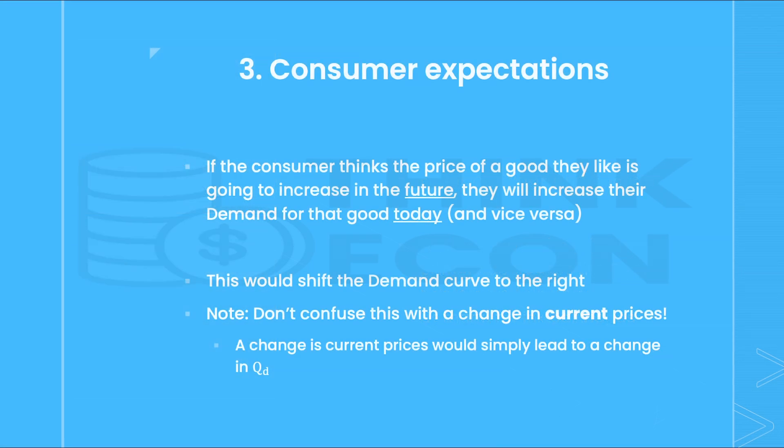The third shift factor is a change in consumer expectations. If the consumer thinks the price of a good is going to increase or decrease in the future, they will increase or decrease their demand for that good today. A great example is gasoline. If it's Thursday and you're driving home with less than a quarter tank of gas, and you hear on the radio that gas prices are expected to increase by 10% by the weekend, you will likely fill up immediately at the cheaper price. On the other hand, if you hear that gas prices are likely to fall by 10% on the weekend, you're more likely to wait and get gas on the weekend to take advantage of the cheaper price. Make sure not to confuse this with a change in current prices — a change in current prices would simply lead to a change in quantity demanded, or a movement along the curve.